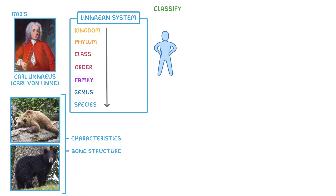For example, humans are Animalia, Chordata, Mammalia, Primates, Hominidae, Homo, and Sapiens.